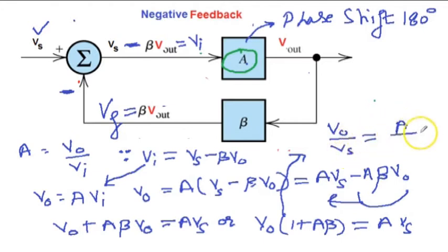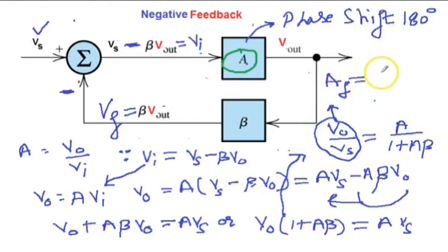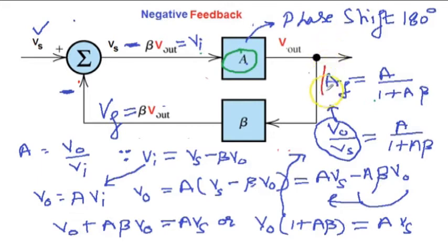From here we find the ratio V0 over VS is equal to A over (1 plus A beta). Now V0 over VS is the gain of the whole negative feedback system. So this is called AF, the feedback gain of the whole system: A over (1 plus A beta). This is the expression for negative feedback.